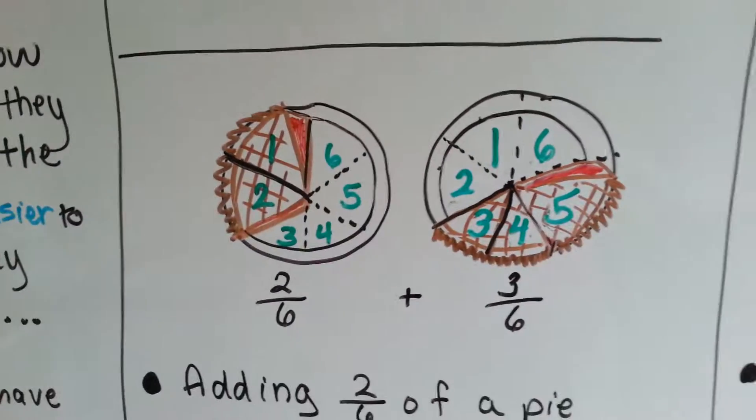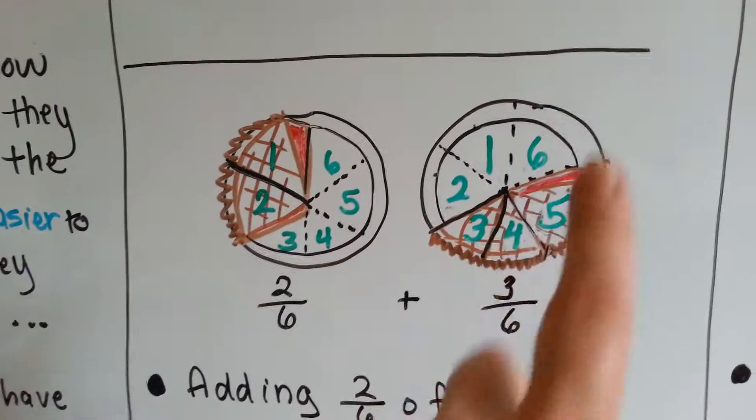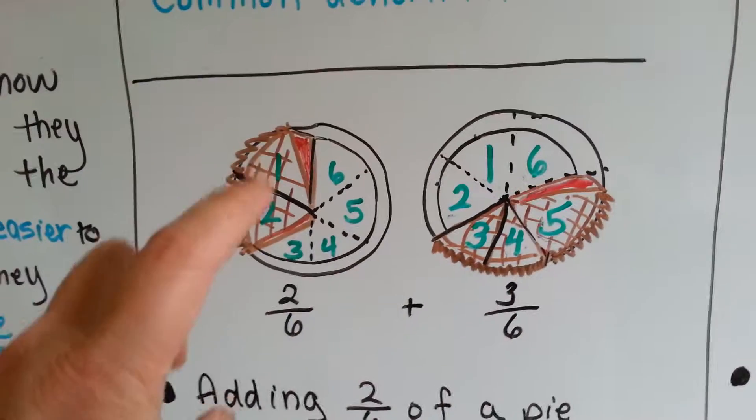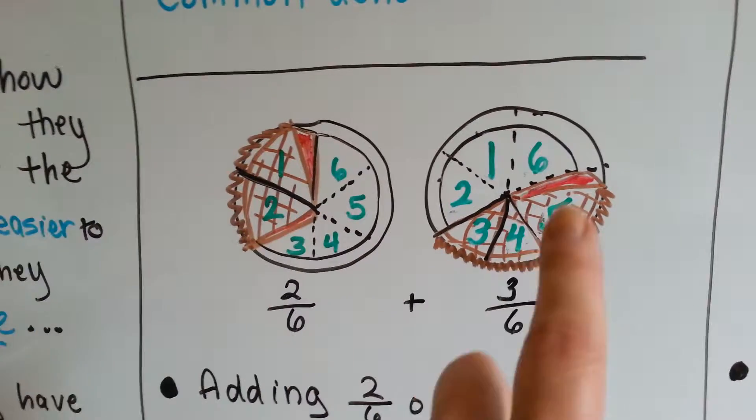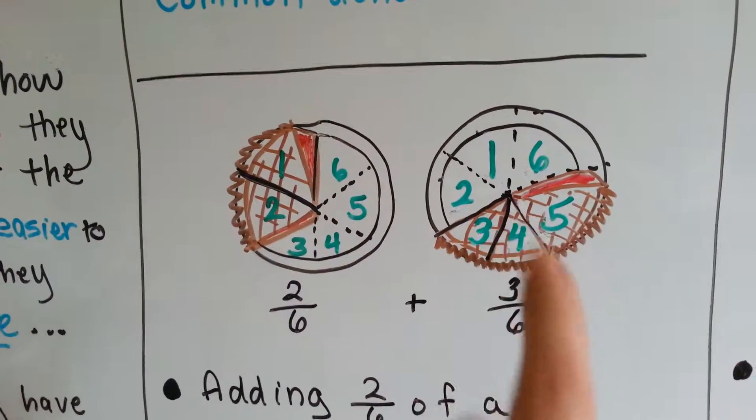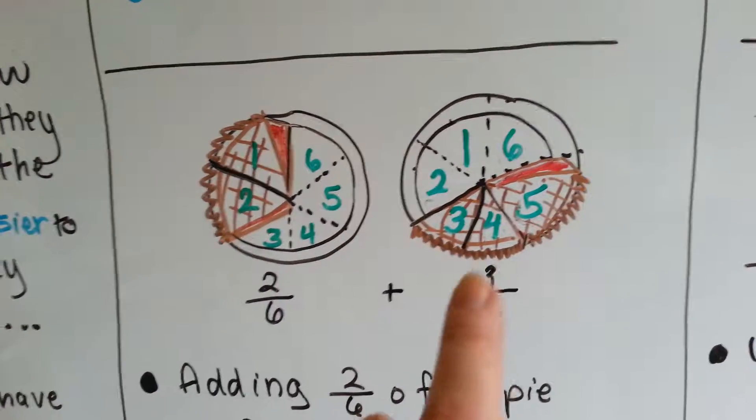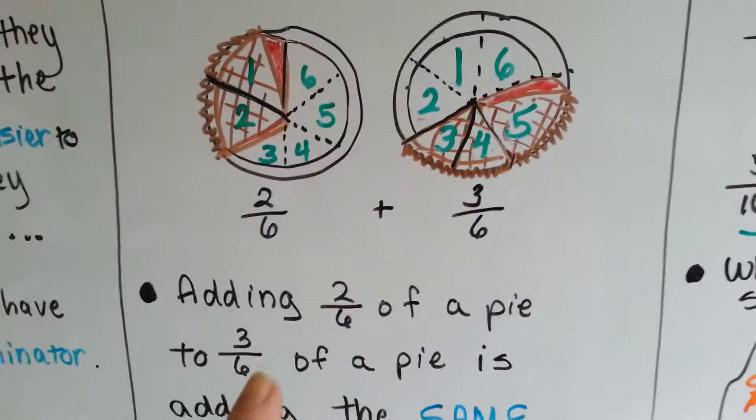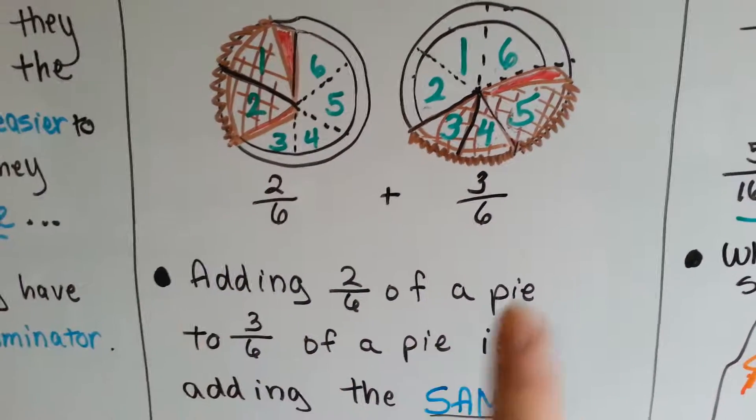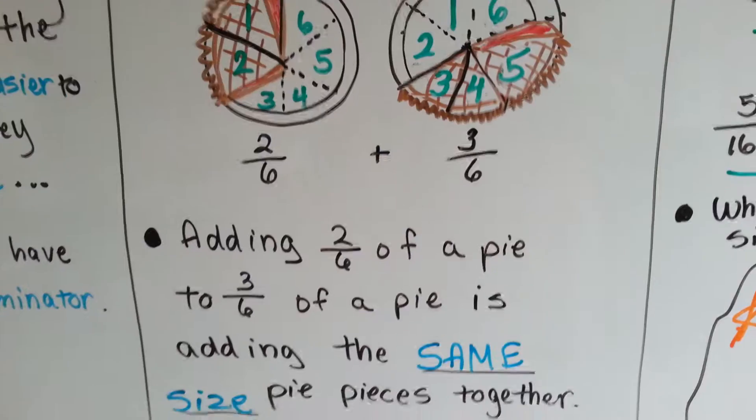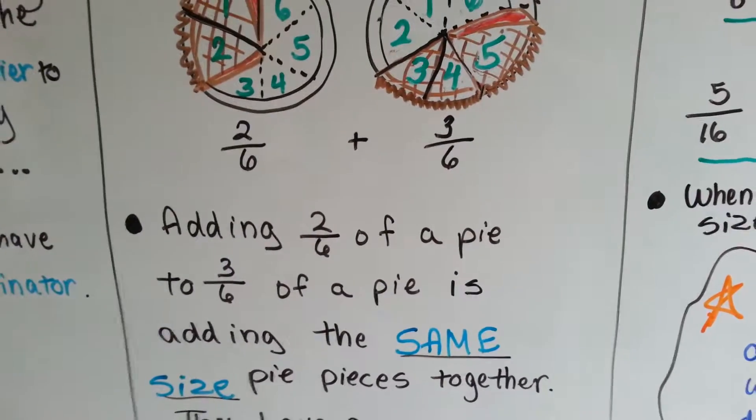Let's look at two pies. This one's cut into six pieces and this one's cut into six pieces. This pie plate has two pieces, this one has three pieces. This is two-sixths, two parts of six, and this is three-sixths, three parts of six.